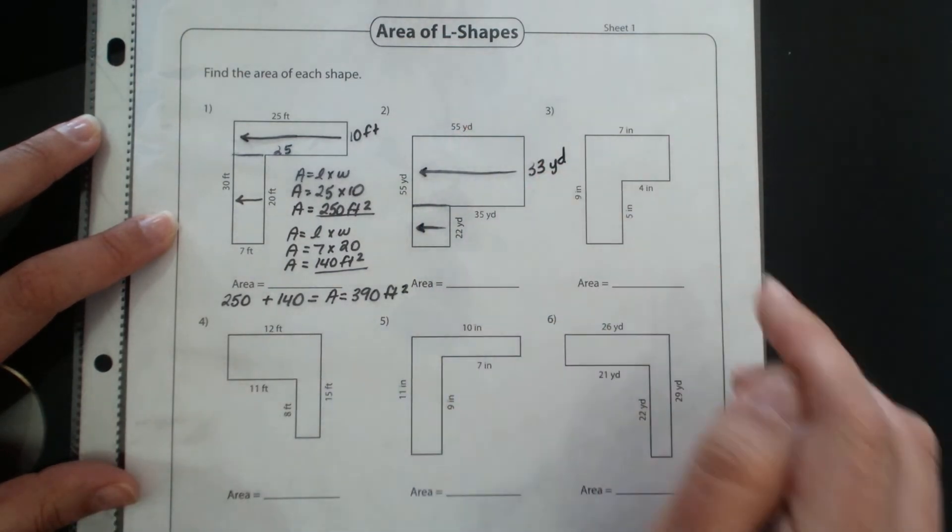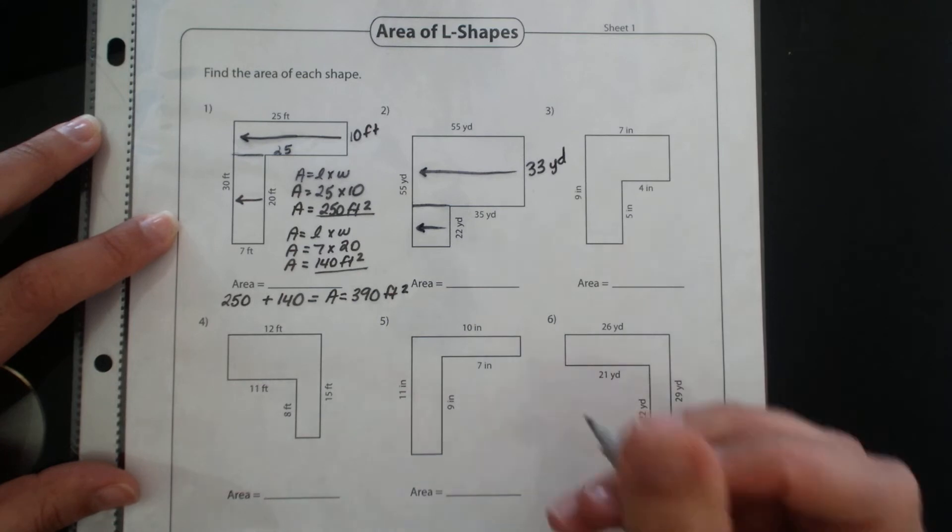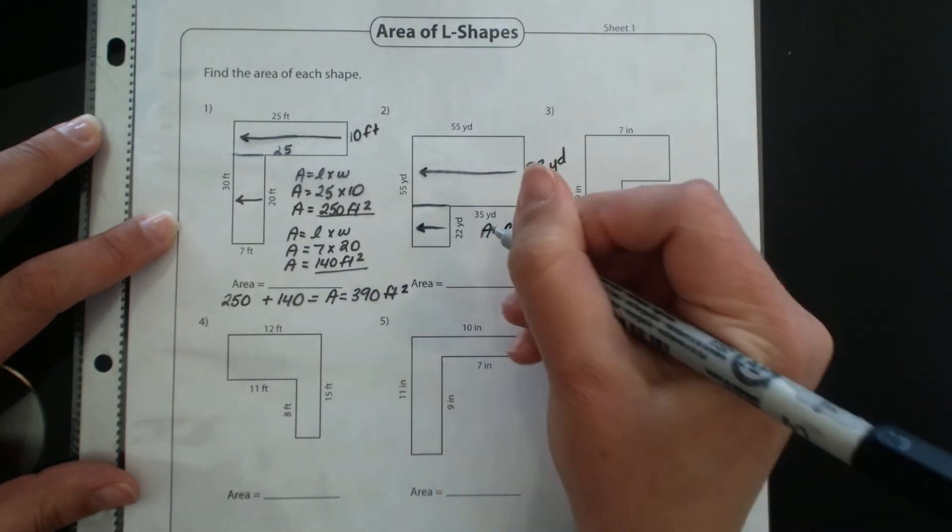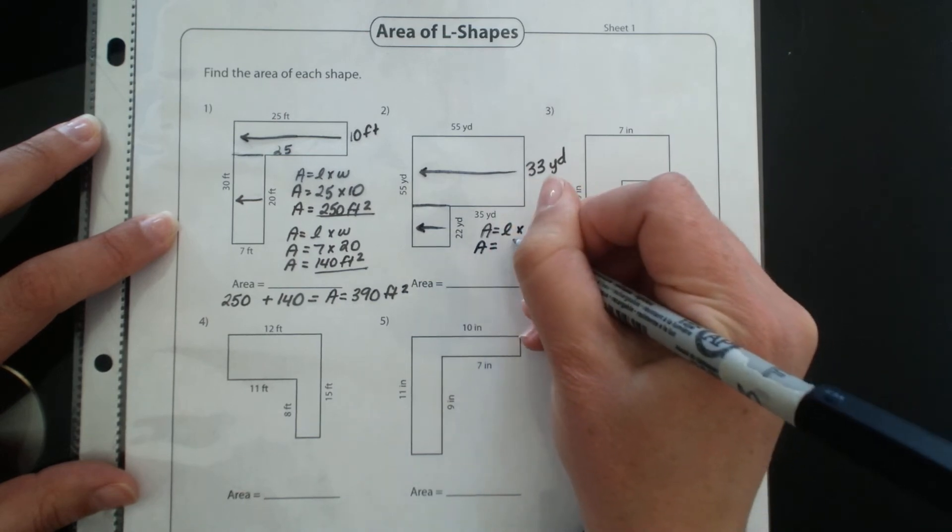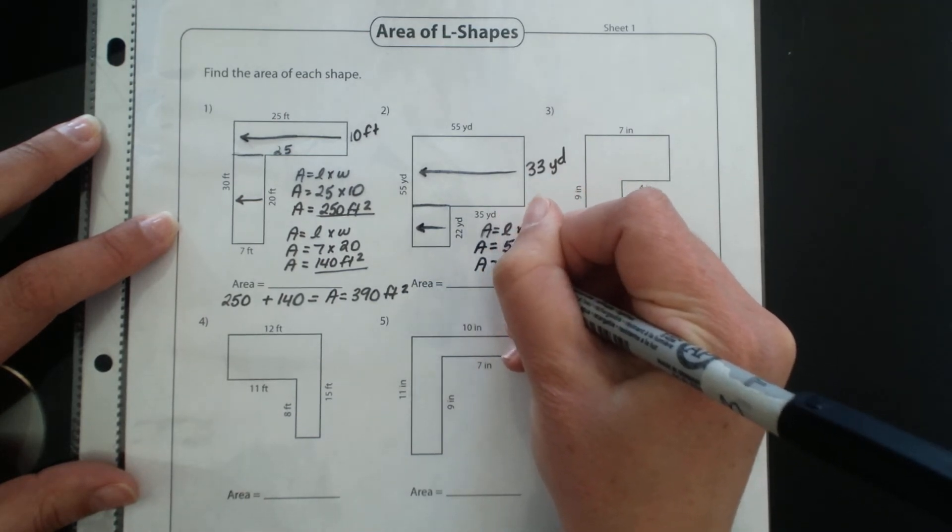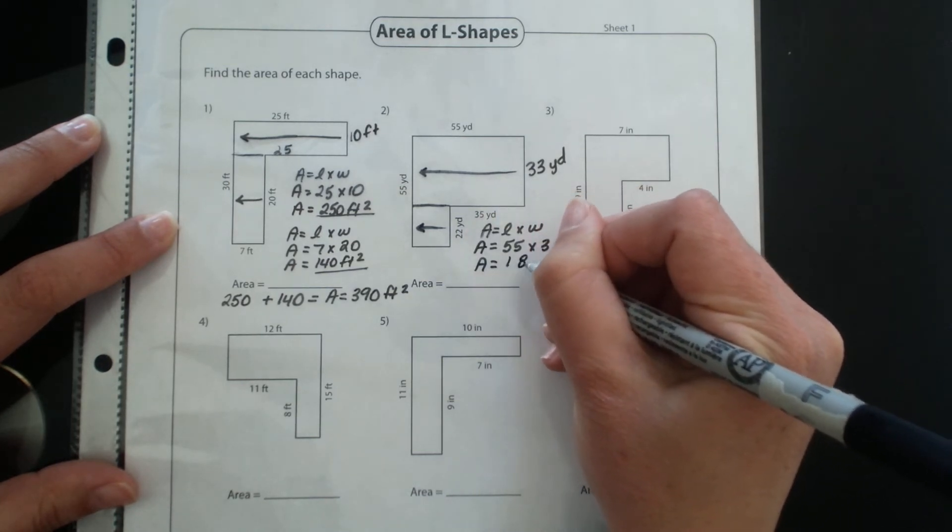And now I have my two measurements and I'm ready to calculate the area on my first rectangle. So area equals length times width, area equals 55 times 33, and for my first rectangle there I find that I have an area of 1815.